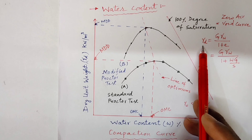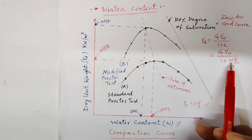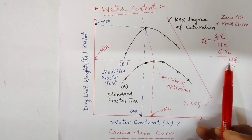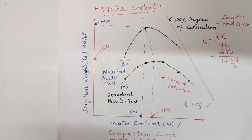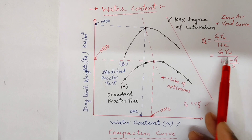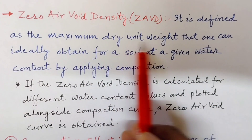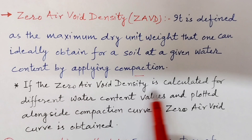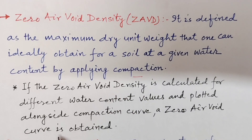From the equation, we can see that dry unit weight depends on water content and degree of saturation. For a given water content, the theoretical maximum value of dry unit weight for a compacted soil is obtained when no air voids are left — that is, when the degree of saturation is 100%. If we put degree of saturation equal to 100% in the equation, we get zero air void density. If the zero air void density is calculated for different water content values and plotted alongside the compaction curve, a zero air void curve is obtained.